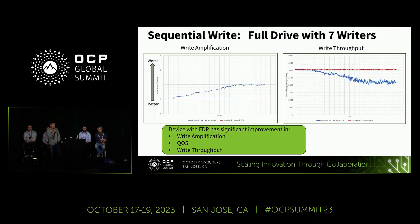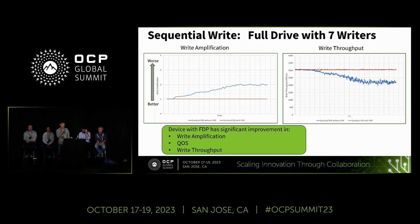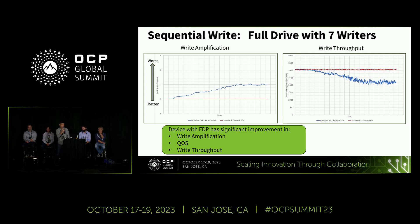This is an early simple test we ran to validate the FDP concept. In this test, there are seven writers all writing to the drive, each issuing sequential workloads. You would think a sequential workload is a very Flash-friendly workload that should minimize the write amplification factor. But as you can see here, in steady state there is a write amplification factor of two, and you can also see write throughput degradation as the drive enters steady state.